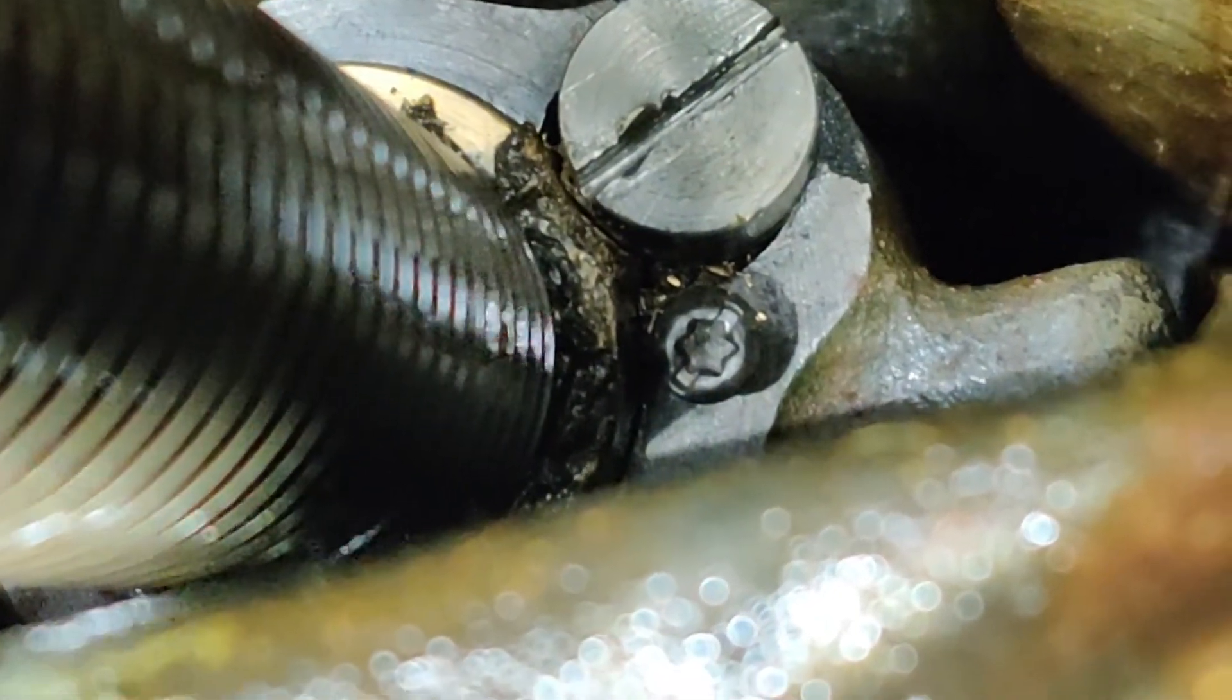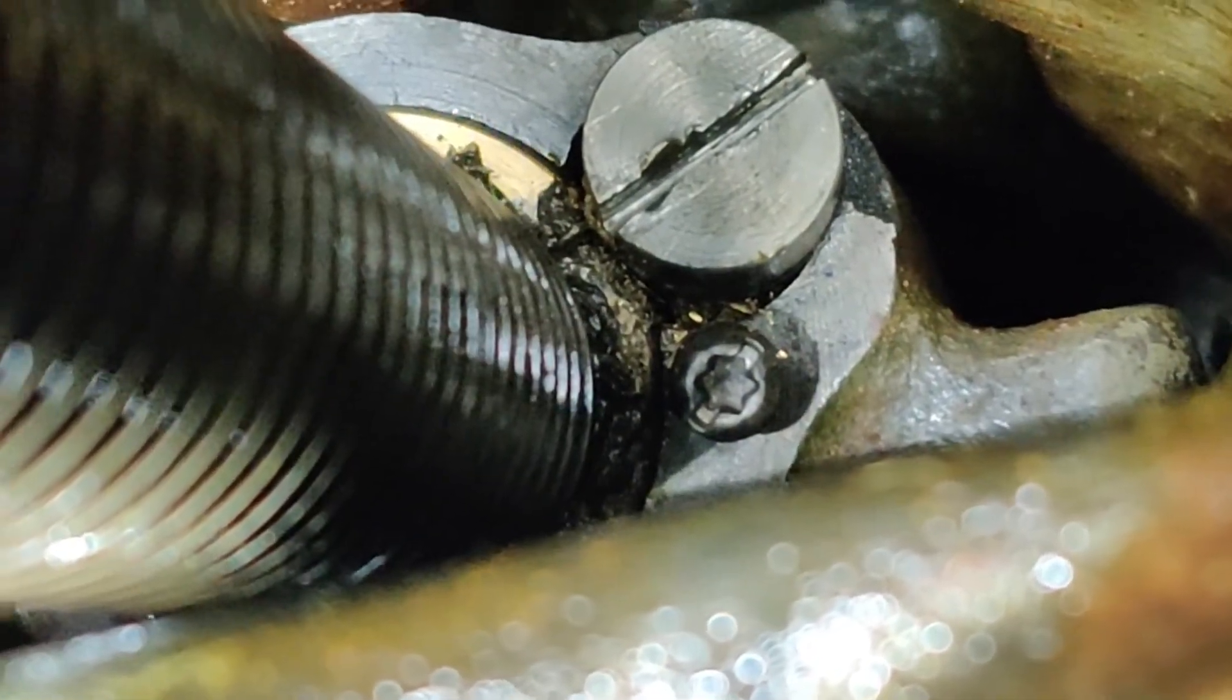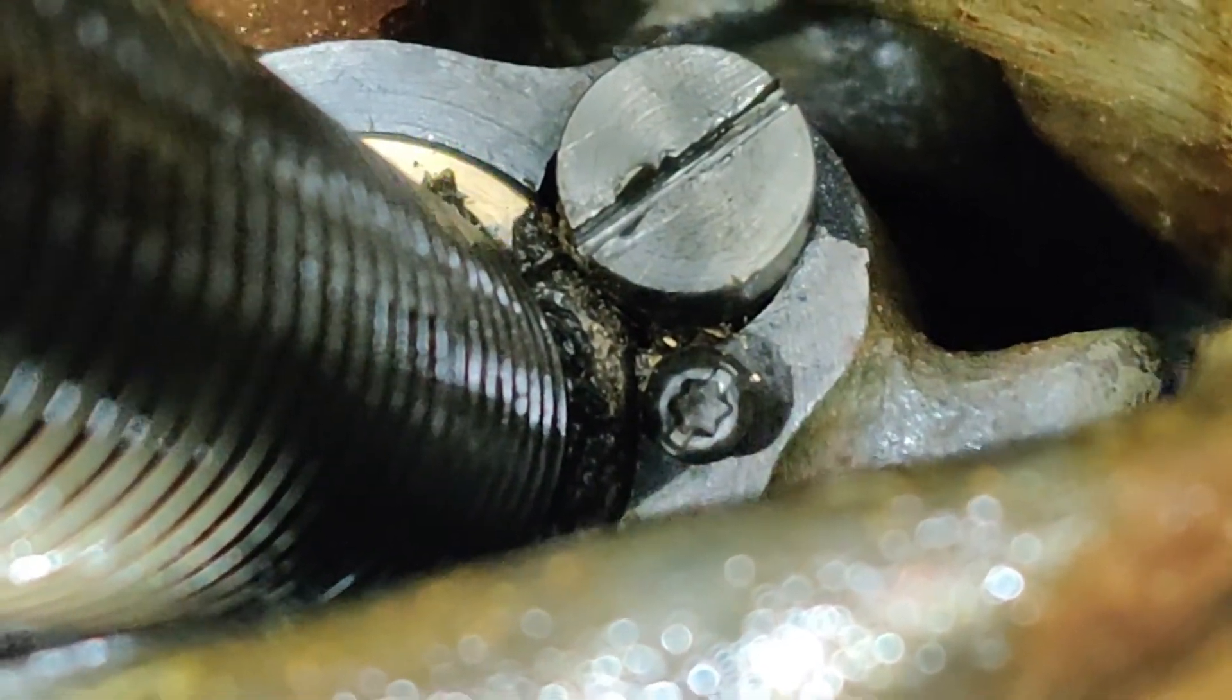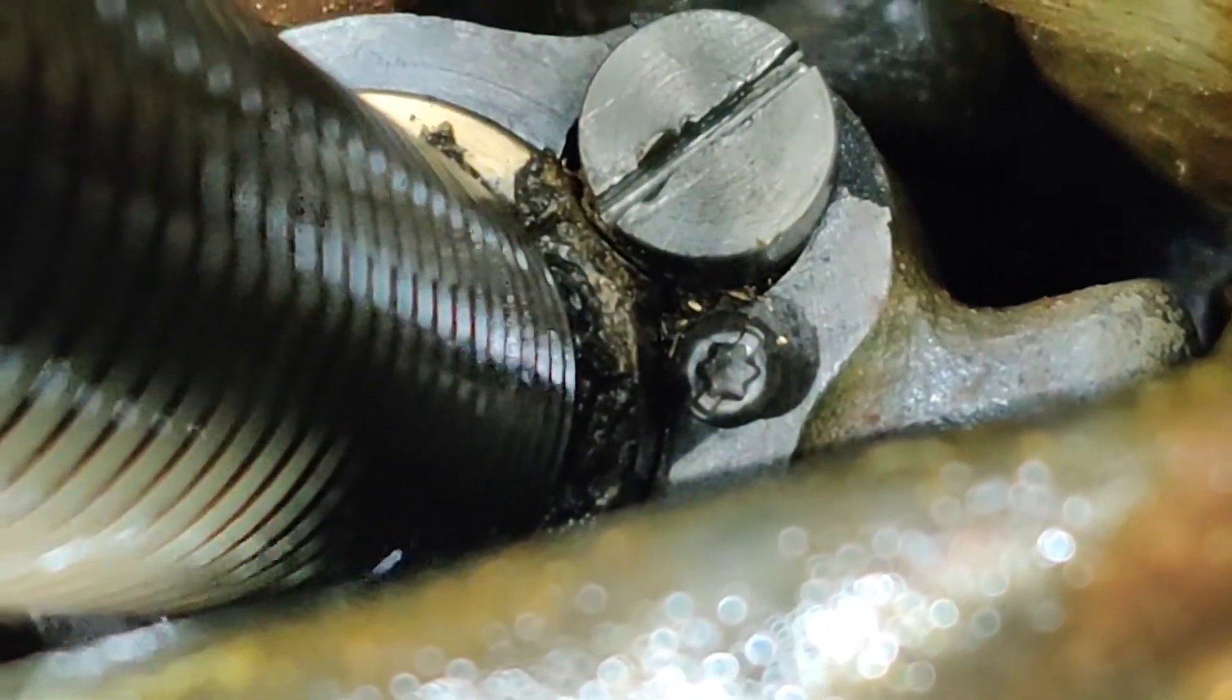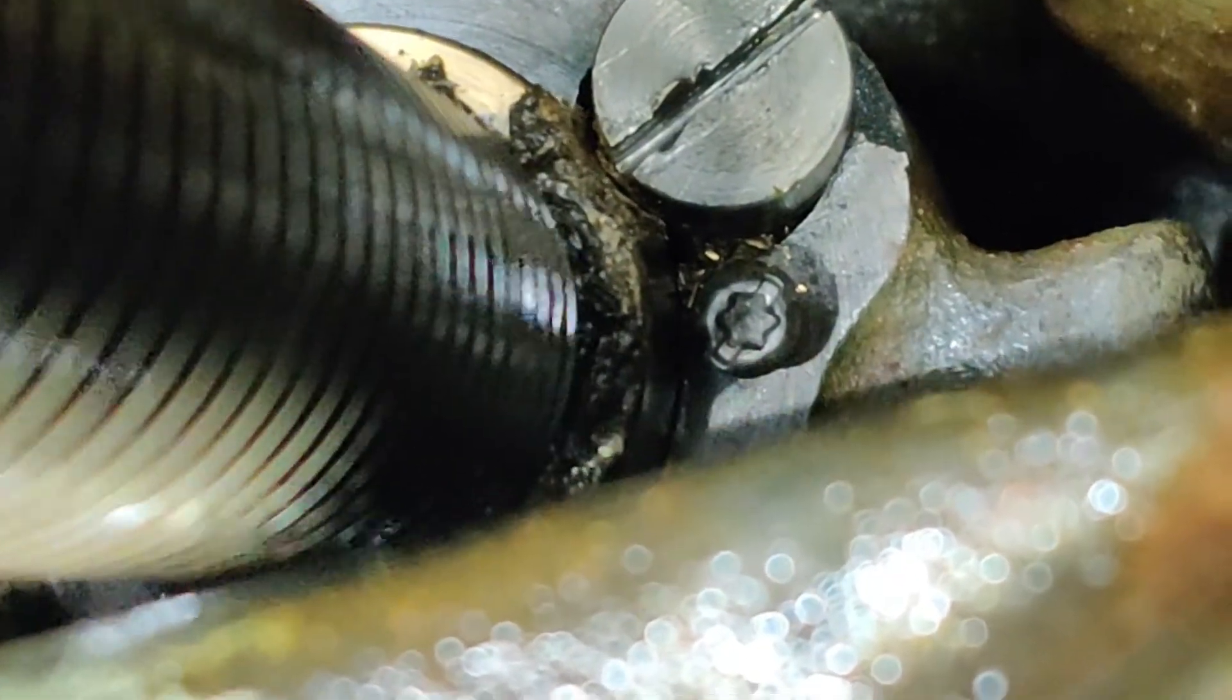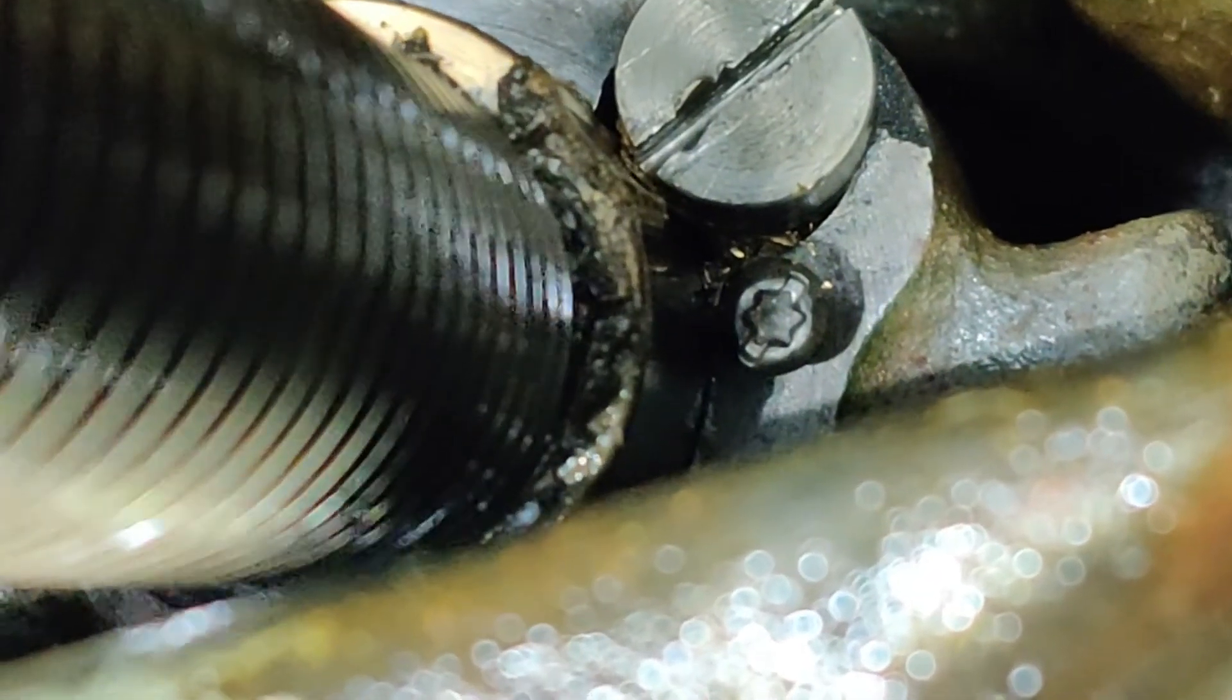It actually looks like a little part of the casting of the nut housing has maybe popped off, so I'm assuming that at some point the table's been banged up against something when it's being transported, and that's rammed the nut past the screw.